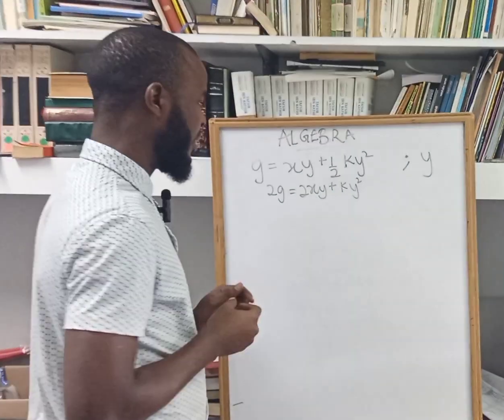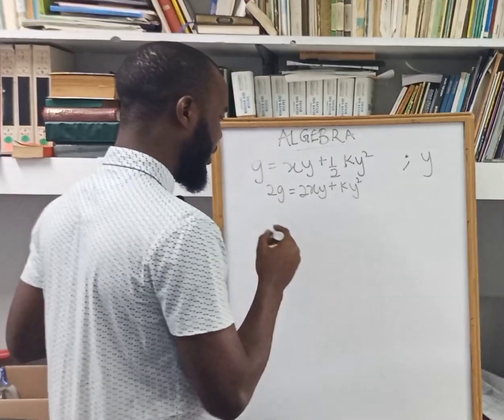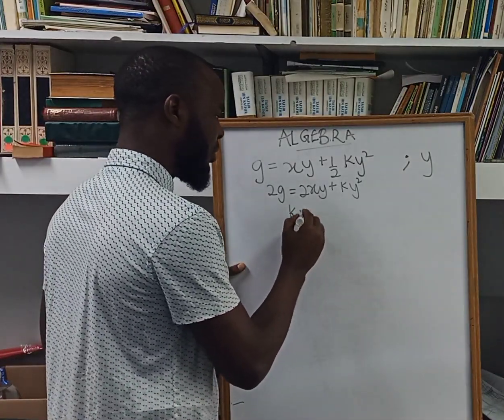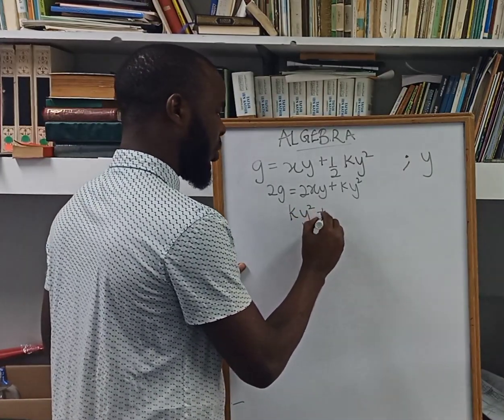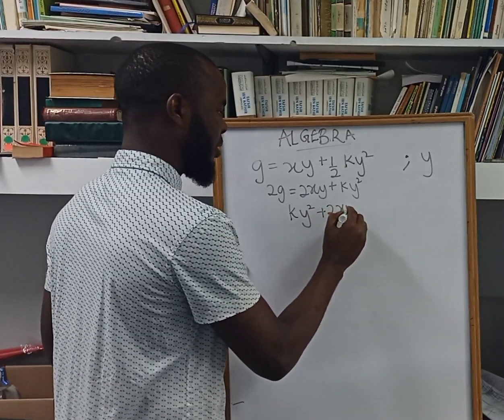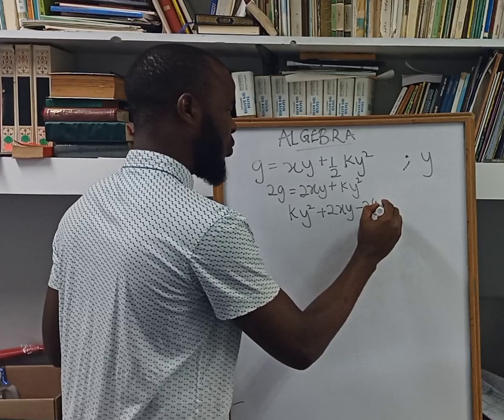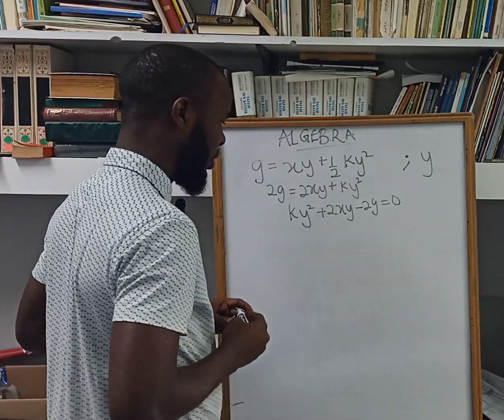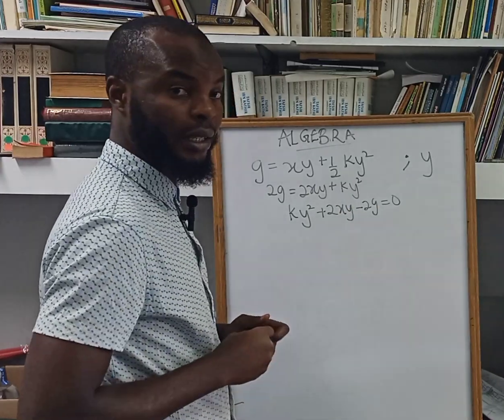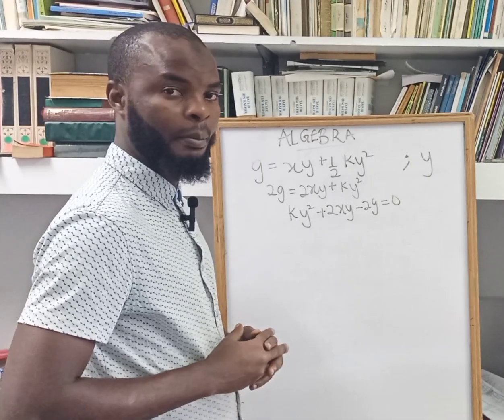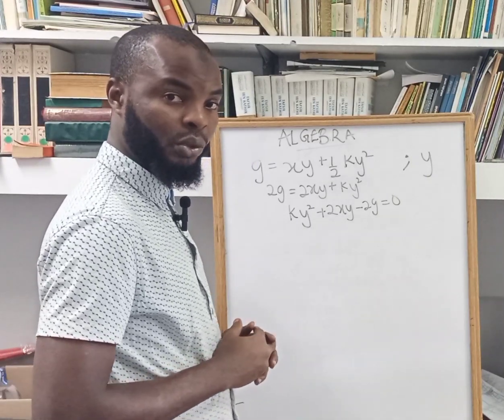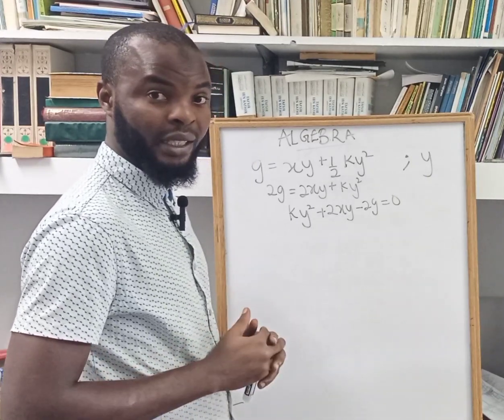Now looking at this, in writing this, this can be written as ky squared plus 2xy minus 2g equals 0. And I can tell you that this is a quadratic term. And the easiest way for us to do this is to use a quadratic formula approach.